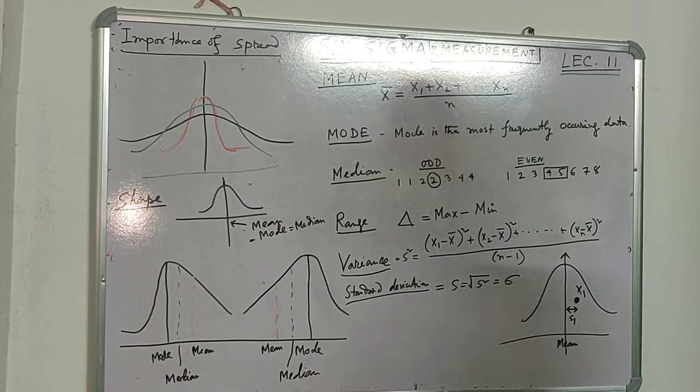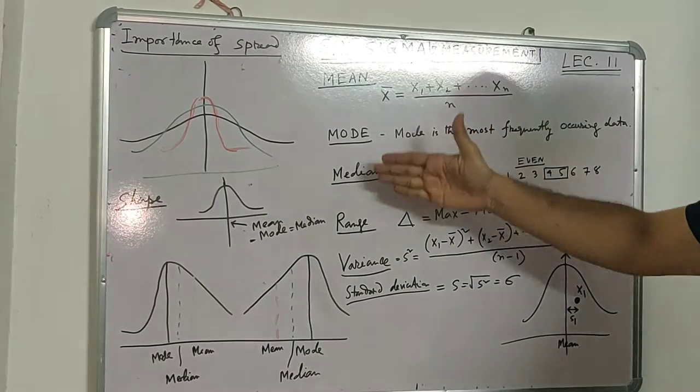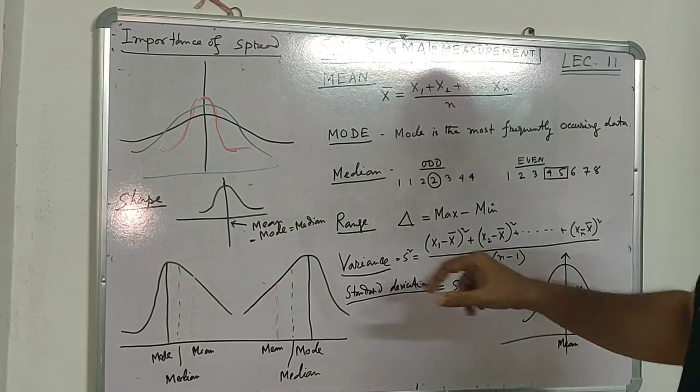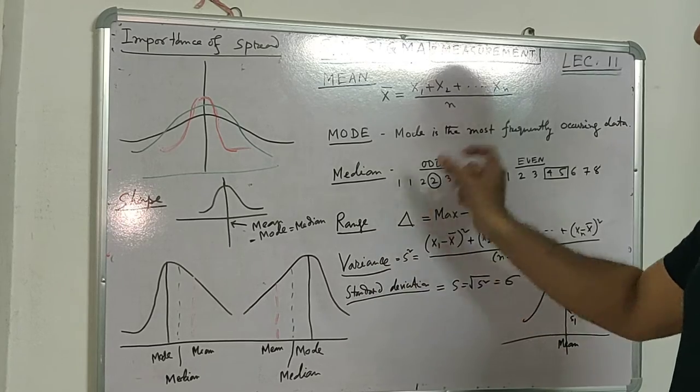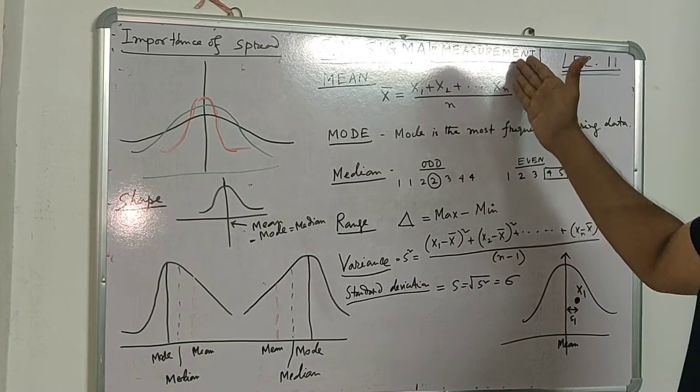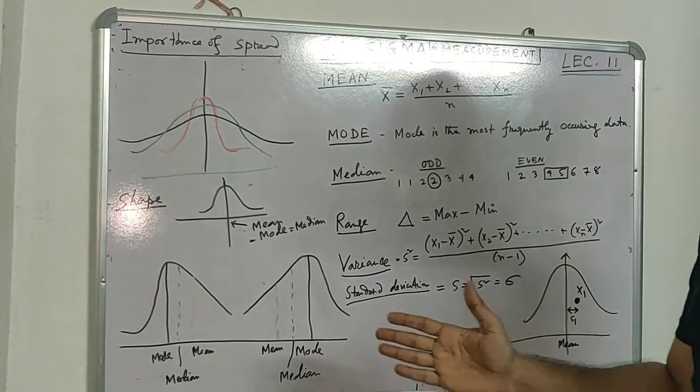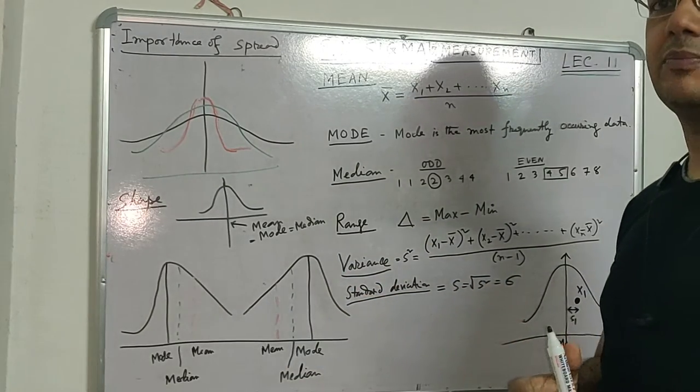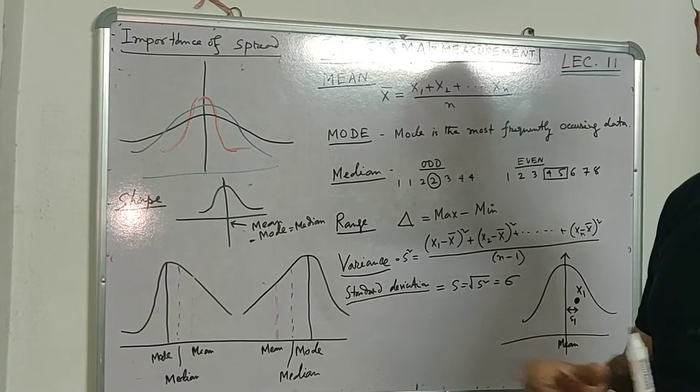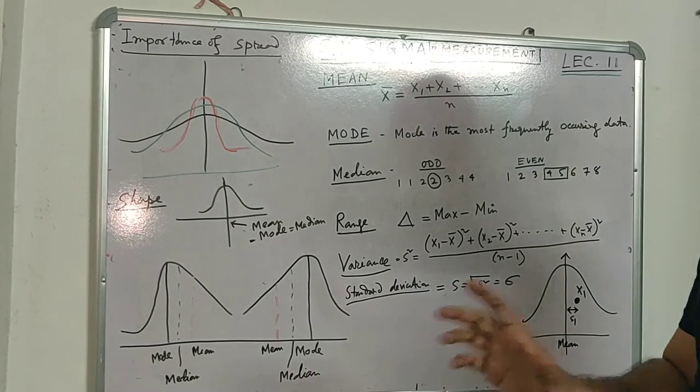Another concept is range. Range is the maximum minus the minimum of collected data. For example, in a process plant if I record temperature—minimum 100 degrees, maximum 150—my range is 50 degrees.